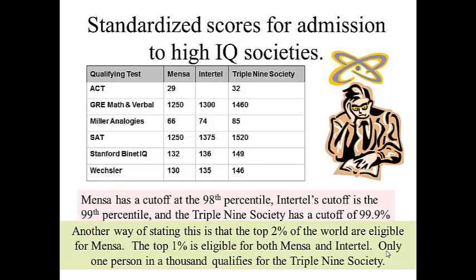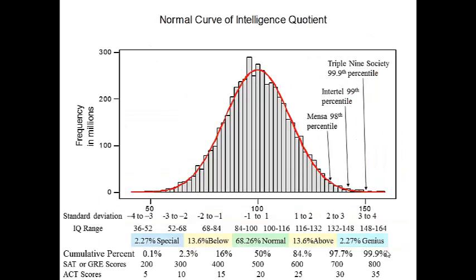The high IQ societies go over to the highest percentile and look at those as their cutoff. So if you make a 29 on the ACT, you're eligible for Mensa, but in order to get into the 999 Society, you'd have to score 32 out of a possible 36. If you add the math and verbal parts of the GRE, you can find the cutoffs for Mensa, Inner Tail, and the 999 Society. Putting it all together, you can have a graph showing exactly where the cutoff is for each of those organizations using your ACT scores, your SAT scores, or your IQ test.